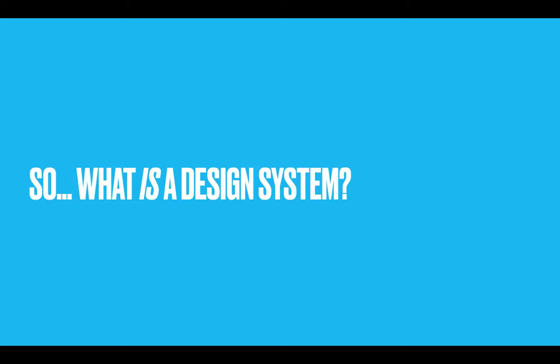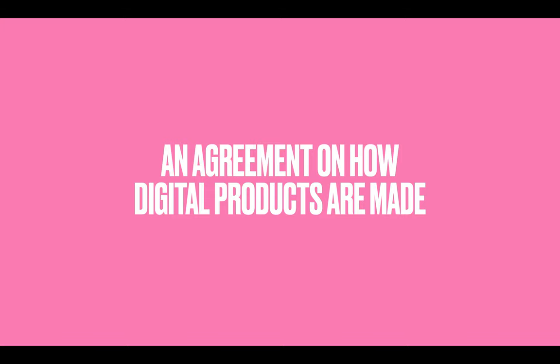So what is a design system? At the root, it's an agreement on how digital products are made. That's all. It's an agreement within your team or your department or your company on what your products are, what they look like, and how they work.